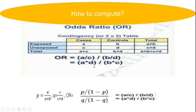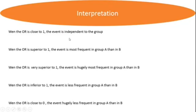For interpretation: when the odds ratio is close to 1, the event is independent in the two groups. For example, if the variable is disease and the odds ratio is close to 1, disease and gender are independent — gender did not significantly influence the occurrence of the disease. If the odds ratio is greater than 1, the event is more frequent in group A than in group B, meaning belonging to group A increases your probability of having a disease.